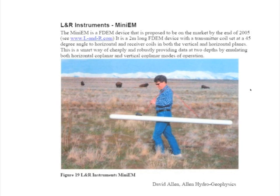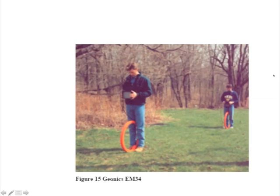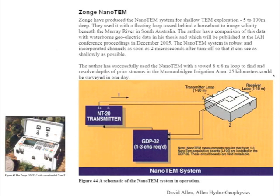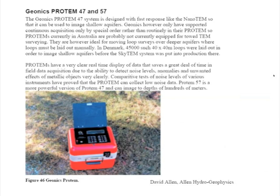I've been showing you some instruments — a couple of frequency domain instruments: the LNR Mini-EM, the Geonyx EM34 with its separable coils, and the Geonyx EM31 with its coils held at a constant distance of about almost four meters apart by a pole that you carry horizontally. There's also a time domain EM instrument, the Zong NanoTEM, and Geonyx's time domain EM instrument, the Geonyx ProTEM line.